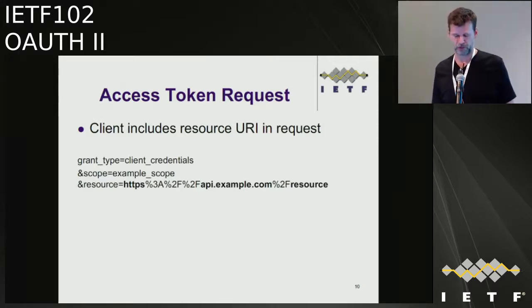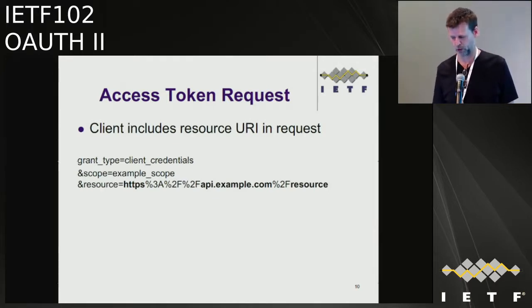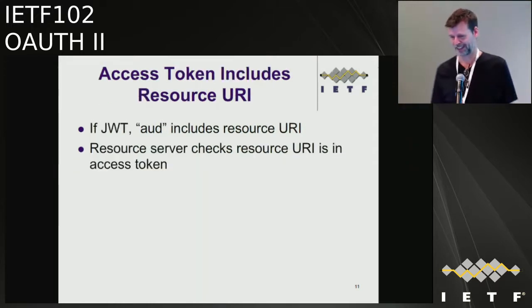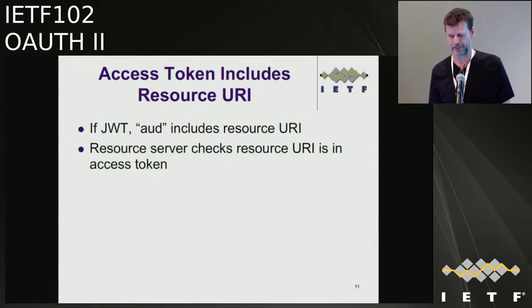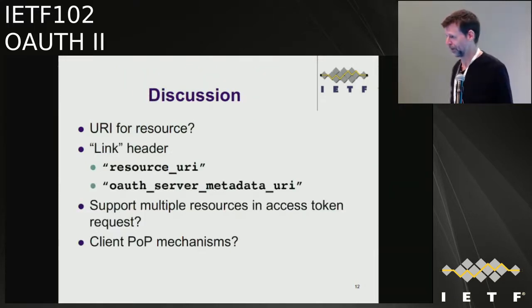How the sender-constrained case is solved isn't covered in the current draft. In the current draft, the flow kicks off when the client calls the resource and in the 401 response gets two additional things in a link header: one is the identifier of the resource and the other is where to go to get information about the authorization server. There was feedback on the list about whether it should be the full URI or the OAuth server metadata URI, and whether using just the issuer makes more sense.